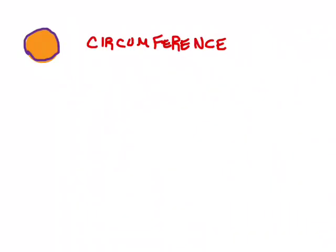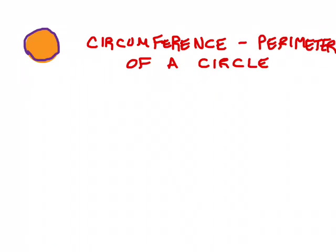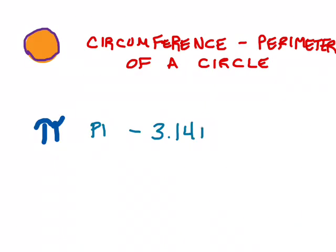A vocabulary word you're going to hear a lot today is circumference — that's the outside of the circle. You might also think of it as the perimeter of the circle: a measurement of how far it is from a point on the circle all the way around back to the same point. We're also going to talk about pi — the Greek letter, spelled P-I, not the delicious dessert. You probably already know that it's approximately 3.14, but it actually goes on forever — it's an infinite number.